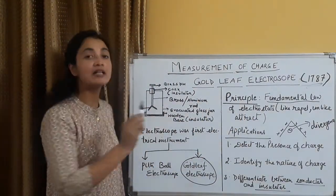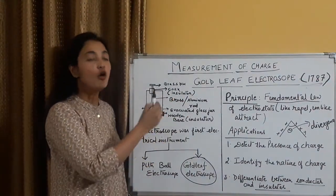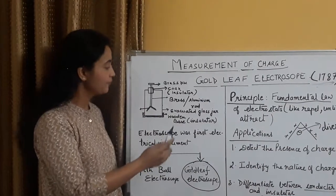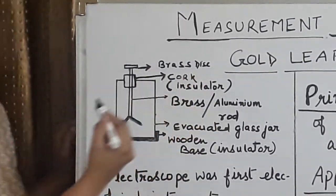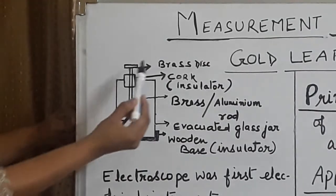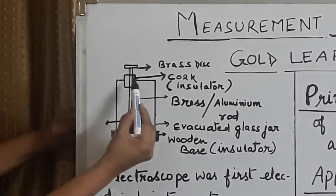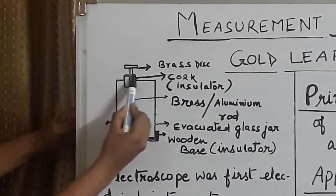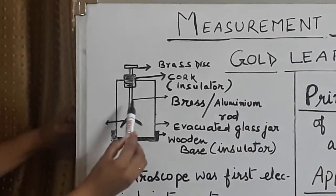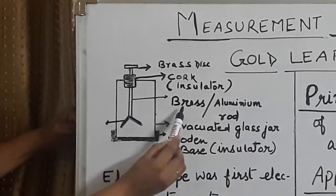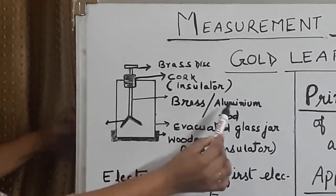By this time, I believe you all know, fundamental law of electrostatics says, like charges repel, unlike charges attract each other. This is the fundamental law. This fundamental law of electrostatics ke principle pe, gold leaf electroscope kaam karta hai. Let us get into the details of construction. Iska jo constructional details hai, wo hum thoda sa dekh sakte hai. You can see, this is a brass disc on top.